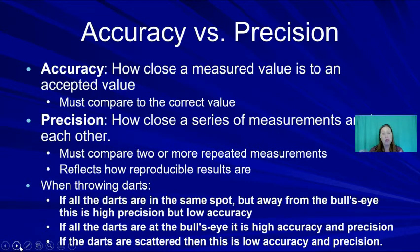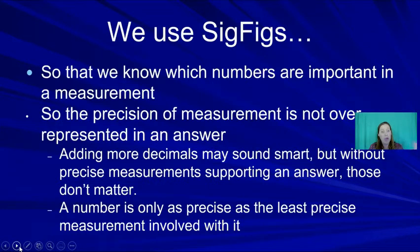Accuracy is how close you are to a measured or expected value. Precision is how close all of your measurements are to each other. We'll look at accuracy when we discuss percent error, and precision when we discuss significant digits.